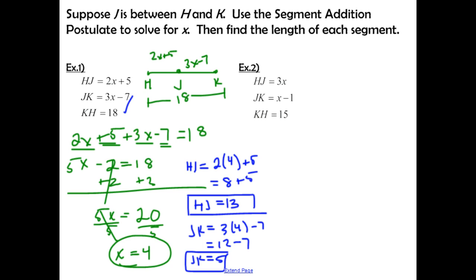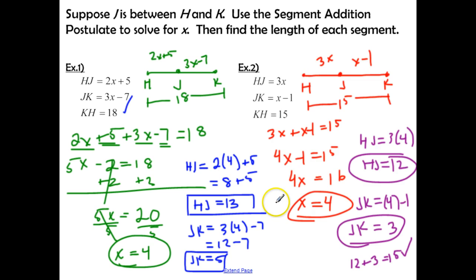Go ahead and press pause and try the second example. Hopefully you got X equals 4, HJ equals 12, and JK equals 3. When you check your answer, 12 plus 3 does equal 15.